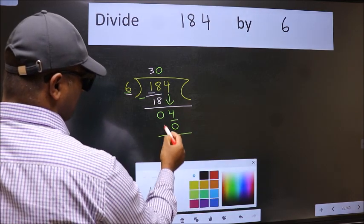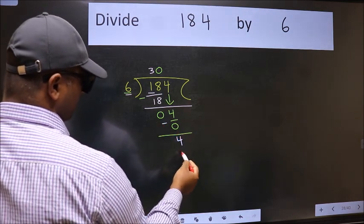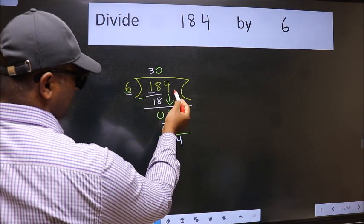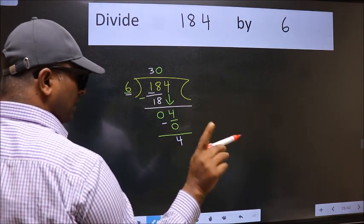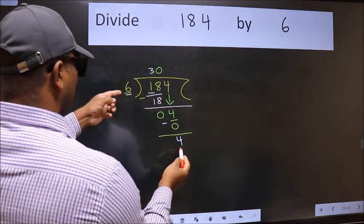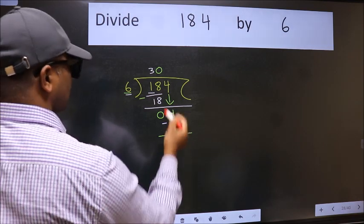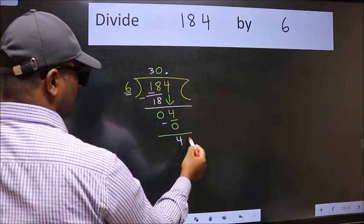Now we subtract. We get 4. Over here, we did not bring any number down, and 4 is smaller than 6.